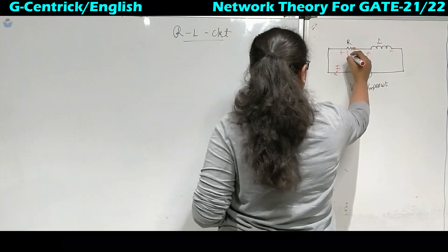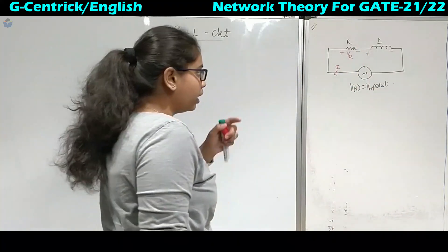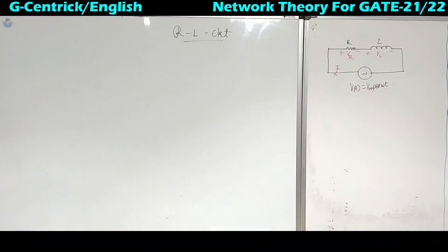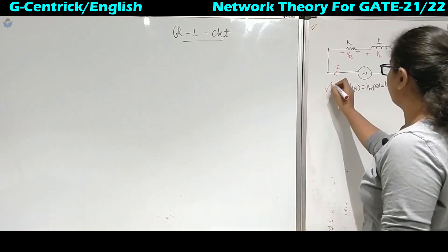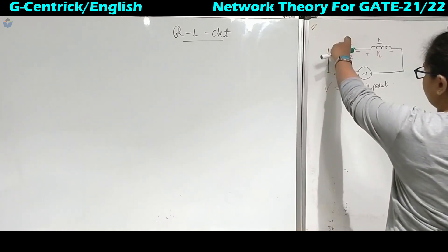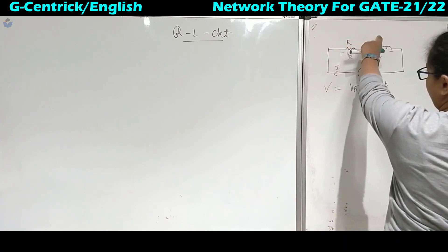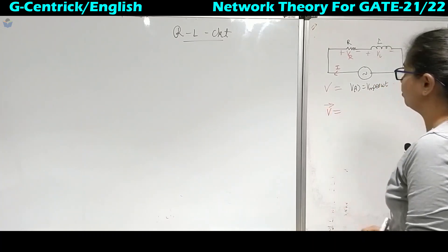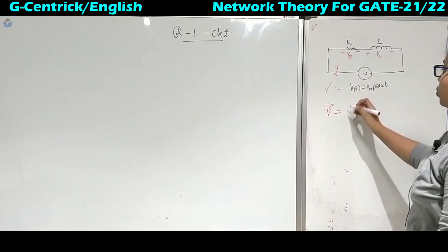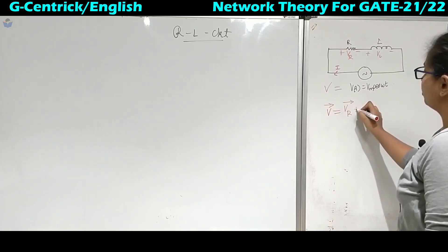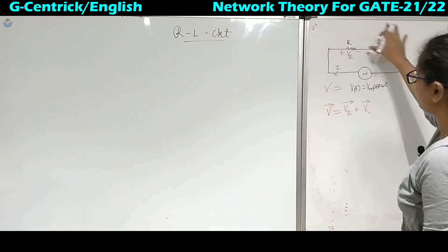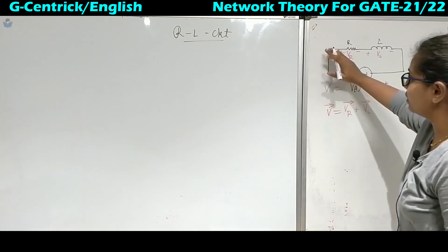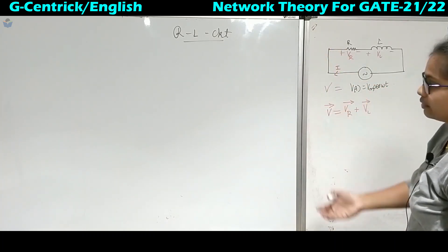The voltage drop across R is Vr and across L is Vl. If we denote the total voltage by V, then we have the vector addition of Vr and Vl. In AC, V is a vector because it has both magnitude and direction. So V is the vector addition of Vr plus Vl — the total voltage of the circuit. In the DC case we would add directly, but since it is AC, we use vector representation.